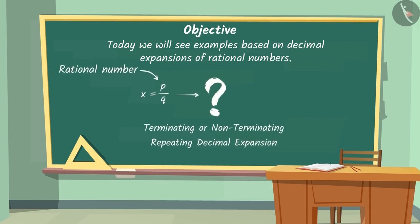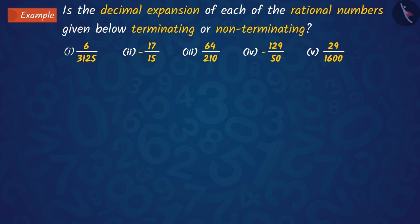Now, we will see an example based on it. Here, without using division, we have to tell which rational numbers have a terminating decimal expansion and which ones have non-terminating decimal expansion.